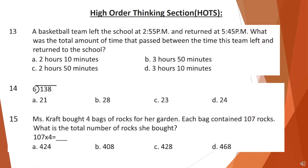Now let's start with the high order thinking section — HOTS. Question 13: A basketball team left the school at 2:55 pm and returned at 5:45 pm. What was the total amount of time that passed between the time this team left and returned to the school? Look at the options and choose your answer.